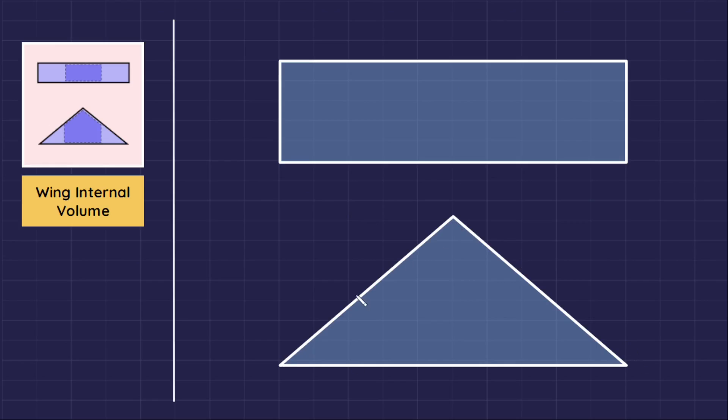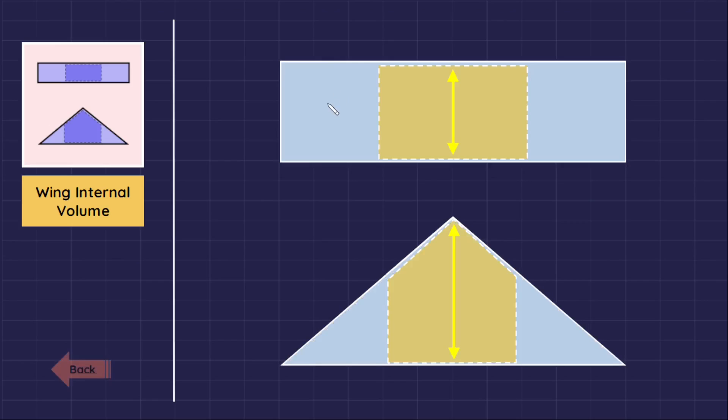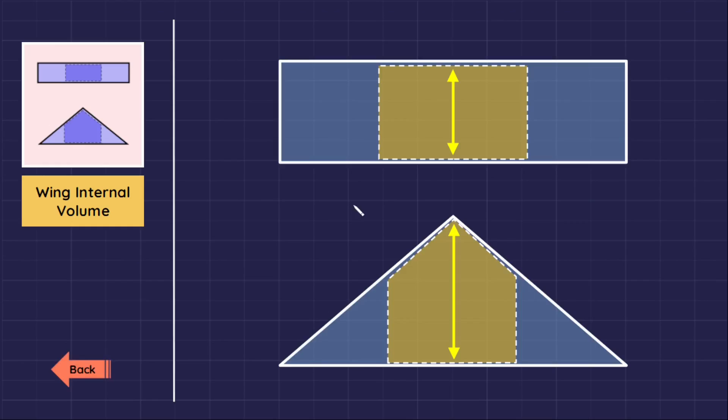If we compare two wings, one is delta wing and the other is rectangular, and both wings have same area and thickness ratio, the delta wing has 40% more volume available to fuel near the root compared to the rectangular wing, because the delta wing root is larger than a rectangular one.